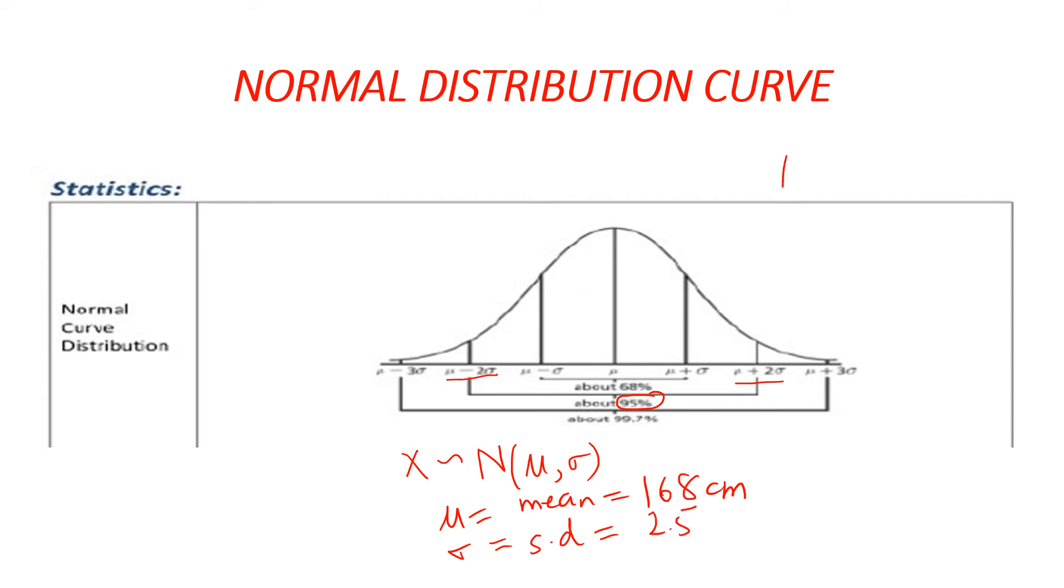So the answer for this question for 95% would be ν minus 2σ to ν plus 2σ. So let's find these values. So 2σ would be 2 times 2.5, which is 5. And ν minus 2σ would be 168 minus 5, which is 163. ν plus 2σ would be 168 plus 5, which is 173.